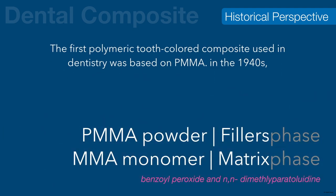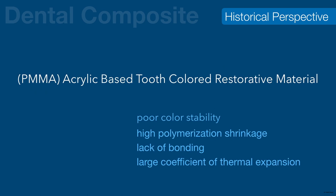The solubility problem of silicate cements led to the introduction of unfilled acrylic systems based on polymethyl methacrylate (PMMA). These materials could be classified as composites because upon mixing, the polymer powder formed a dispersed phase and the monomer polymerized to form a continuous phase. Polymerization was initiated at room temperature using a combination of benzoyl peroxide and tertiary amines. Although initially aesthetic, they were soon plagued with problems such as poor color stability, high polymerization shrinkage, lack of bonding to tooth structure, and a large coefficient of thermal expansion.